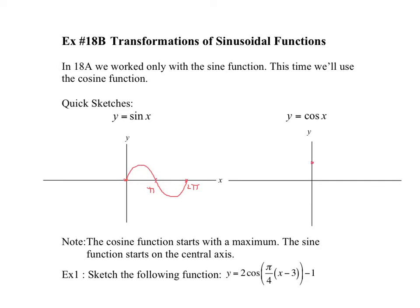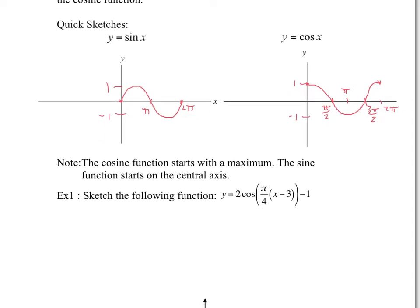Cosine starts at its maximum value of 1, then at pi over 2 is 0 — you can get those values from the unit circle. At pi it has negative 1, and then at 2pi again, completing a period of 2pi. So the biggest difference is you have to know where the cosine function starts. The cosine function starts with a maximum; the sine function starts on your central axis.